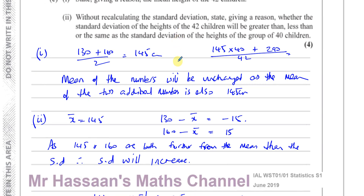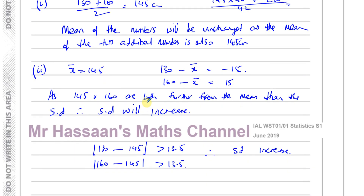To summarise: |130 − 145| = 15 > 13.5 and |160 − 145| = 15 > 13.5, so the standard deviation will increase. If those distances had been less than 13.5, the standard deviation would decrease; if equal to 13.5, it would remain the same. The standard deviation will increase because the average spread from the mean becomes greater.